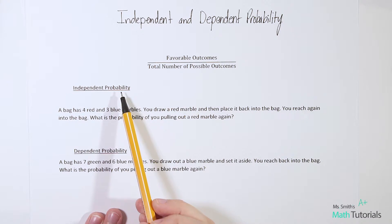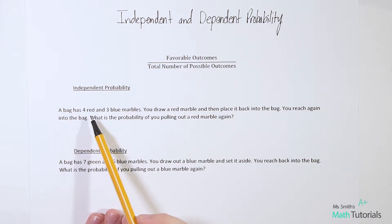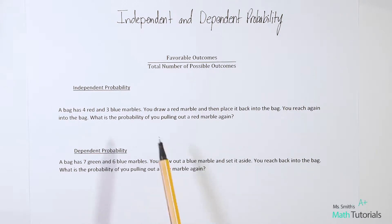For independent probability, this says a bag has four red and three blue marbles. You draw a red marble and then you put it back into the bag. You reach again into the bag. What is the probability of you pulling out a red marble again? Well, the key fact here is that we drew out a red marble but then we put it back. So when you put the marble back...